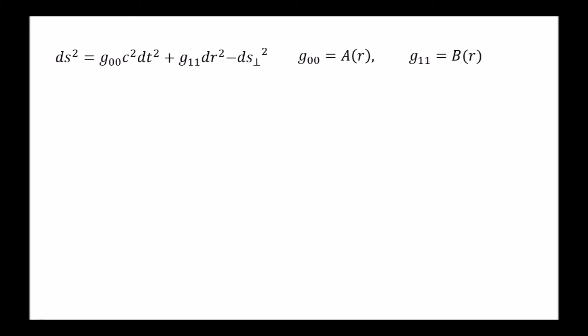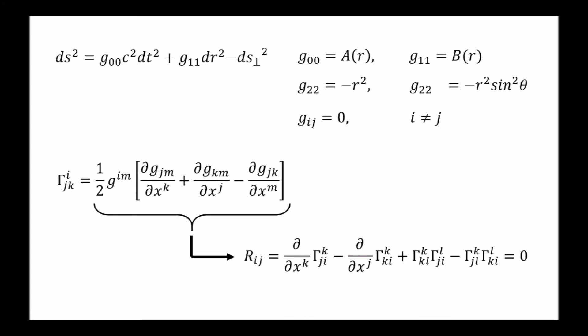To complete the analysis so far, let's also write down the other components of the metric tensor. All we have to do now is work out the Christoffel symbols and insert them into Einstein's field equations for vacuum.